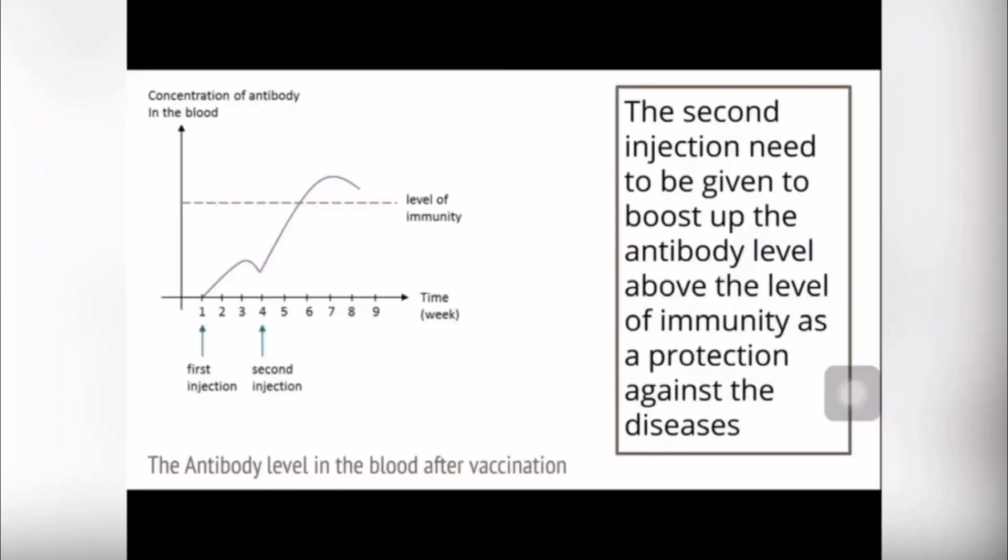This is the graph of the antibody level in the blood after vaccination. Looking at the graph, we can see that a second injection needs to be given to boost the antibody level above the level of immunity as protection against the disease.